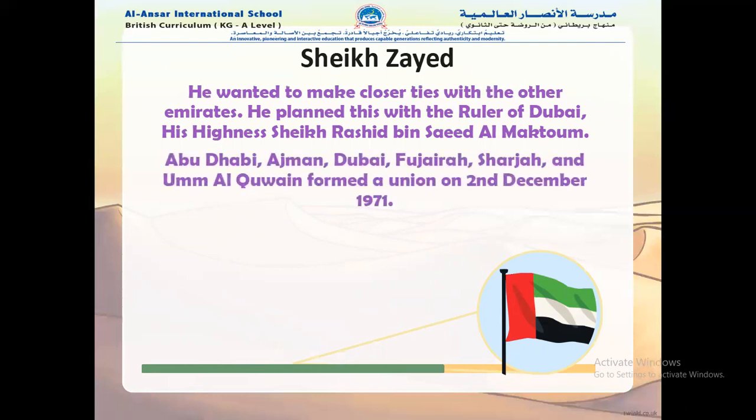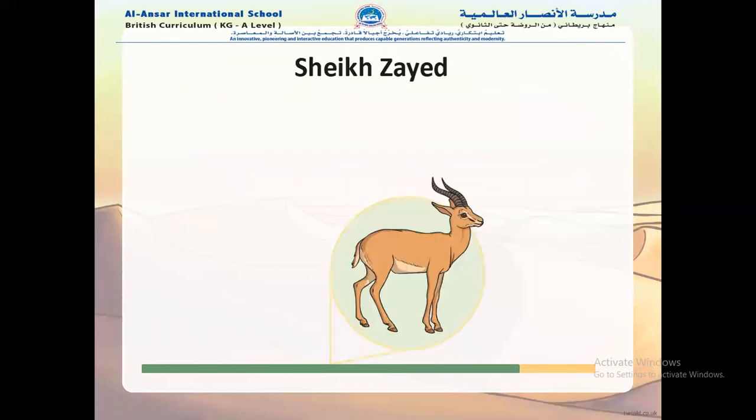Abu Dhabi, Ajman, Dubai, Fujairah, Sharjah, and Umm al-Quwain formed a union on 2nd December 1971. At that time, Ras al-Khaimah was not part of them — only 6 emirates. But later, after 2 months, Ras al-Khaimah also joined the union in February 1972, and then there were 7 emirates in the UAE.